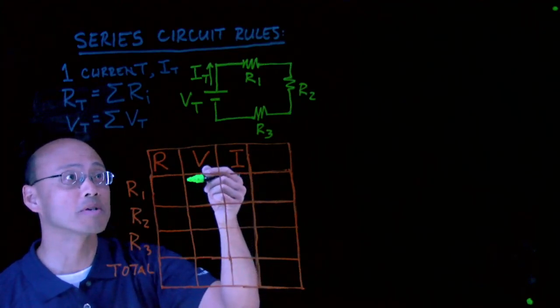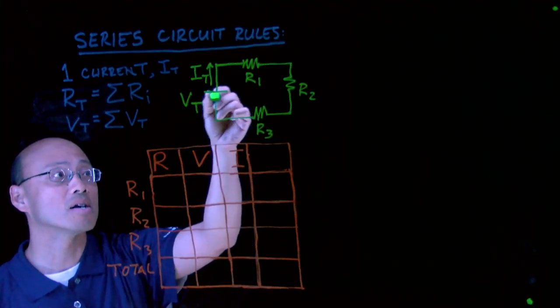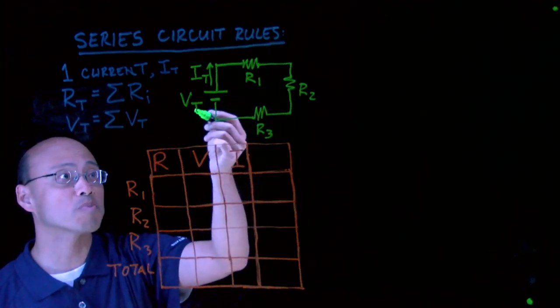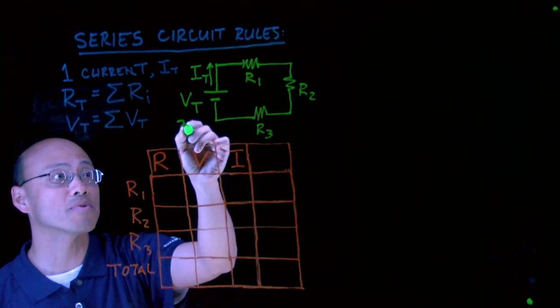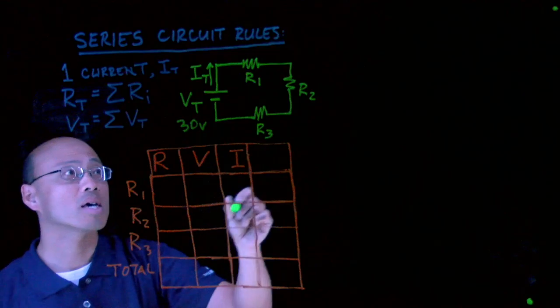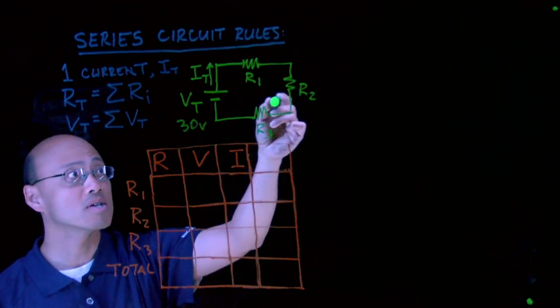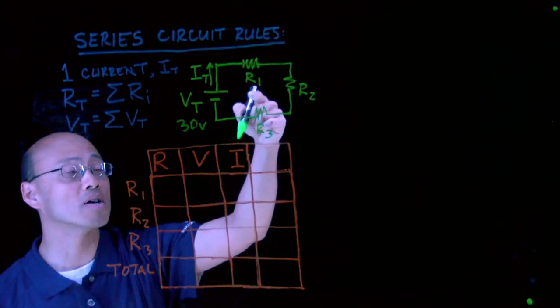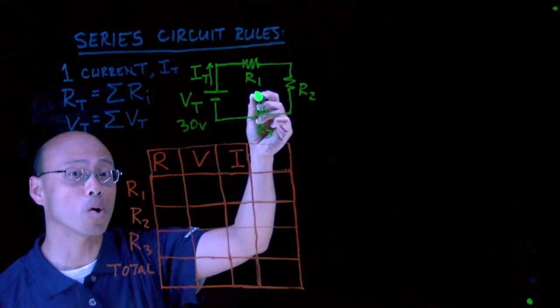Let's suppose we have a problem as follows. We have a series circuit that's powered, let's say by 30 volts, and we have three resistors.